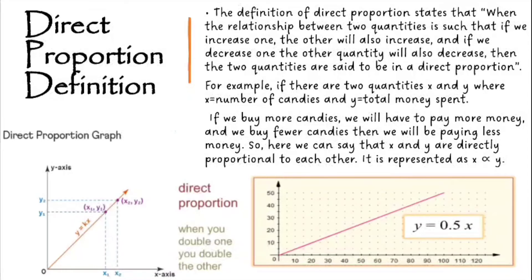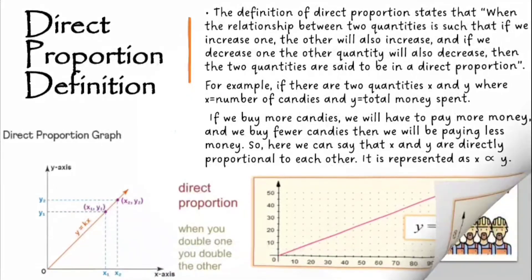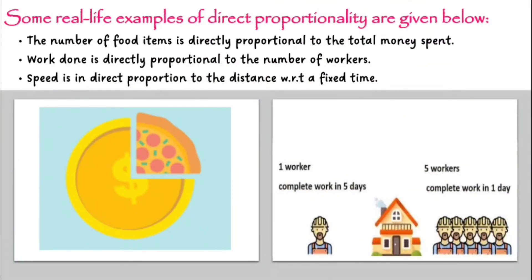For example, if there are two quantities x and y, where x is equal to number of candies and y is equal to total money spent — if we buy more candies, we will have to pay more money, and if we buy fewer candies, then we will be paying less money. So here we can say that x and y are directly proportional to each other.